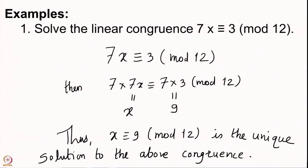We can check: putting x = 9 gives 9·7 = 63 = 60 + 3, and 60 is a multiple of 12, so 63 ≡ 3 (mod 12). This confirms x ≡ 9 (mod 12) is the unique solution. This is how one solves linear congruences.